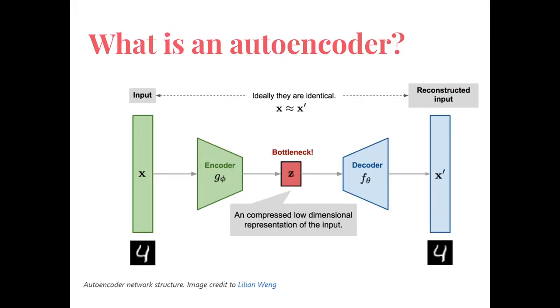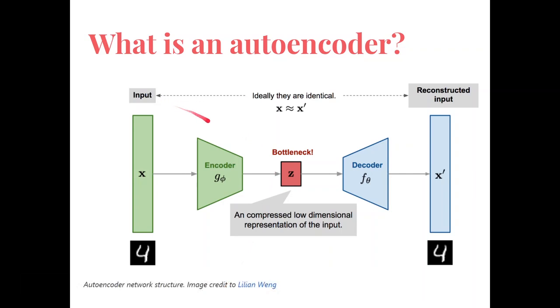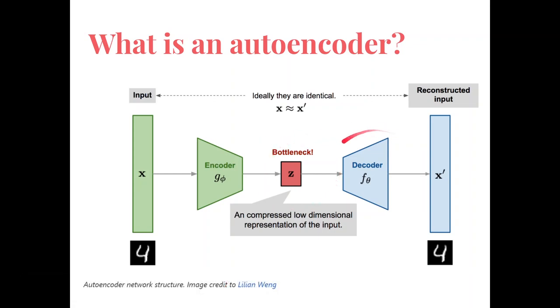An autoencoder is an artificial neural network that learns how to efficiently compress and encode data and how to reconstruct this data back from the reduced encoded representation to a representation that is as close to the original input as possible. As we can see in the image, we have three main parts: the encoder, the latent space and the decoder.